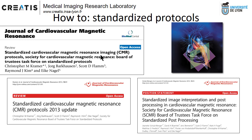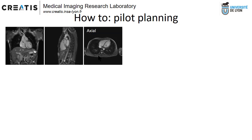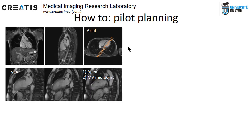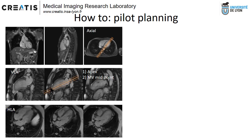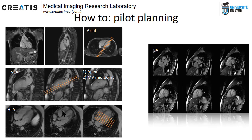I would like to explain step-by-step how to do it. Usually we start with a pilot, and we take the axial pilot to set three slices that go from the apex to the mid of the mitral valve. You center the apex, center the mitral valve, and you get a horizontal longitudinal axis view of the heart. Then you do a short axis view to cover especially the aortic root, which will be very useful later on.